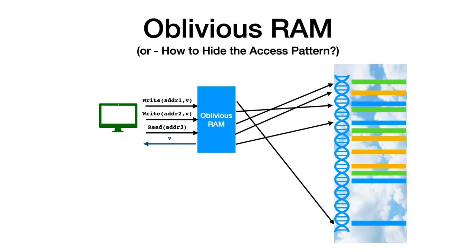Oblivious RAM solves this exact problem. It can be viewed as a compiler that takes the program that the client wishes to execute and converts each memory access to some sequence of operations on the physical memory. It shuffles elements around the physical memory and moves blocks around to hide the logical access pattern. In particular, it also introduces some overhead: every access in the logical program is translated to many accesses by the Oblivious RAM compiler.